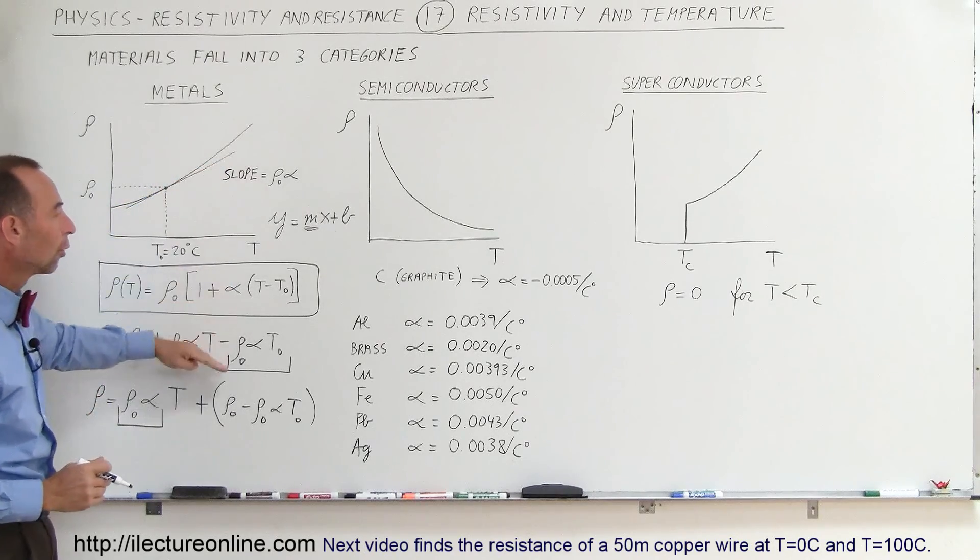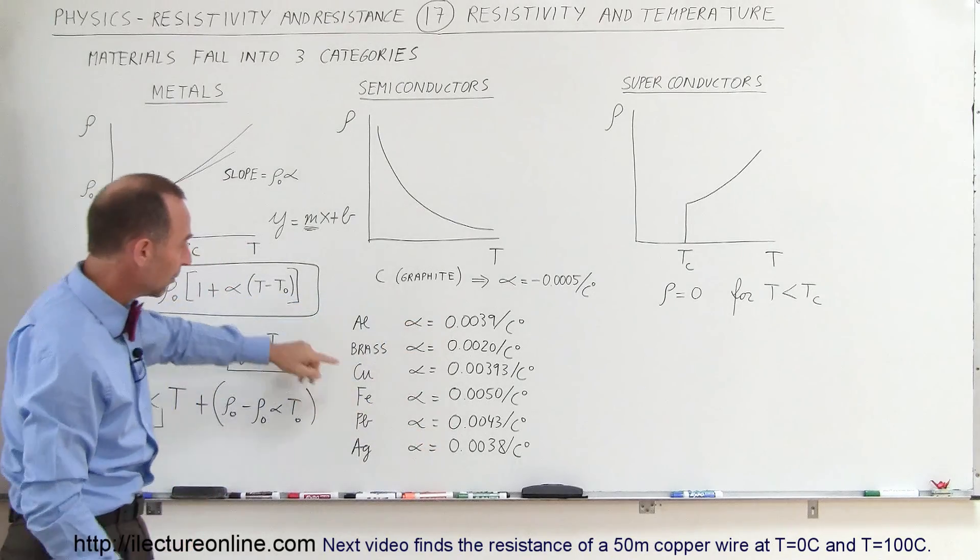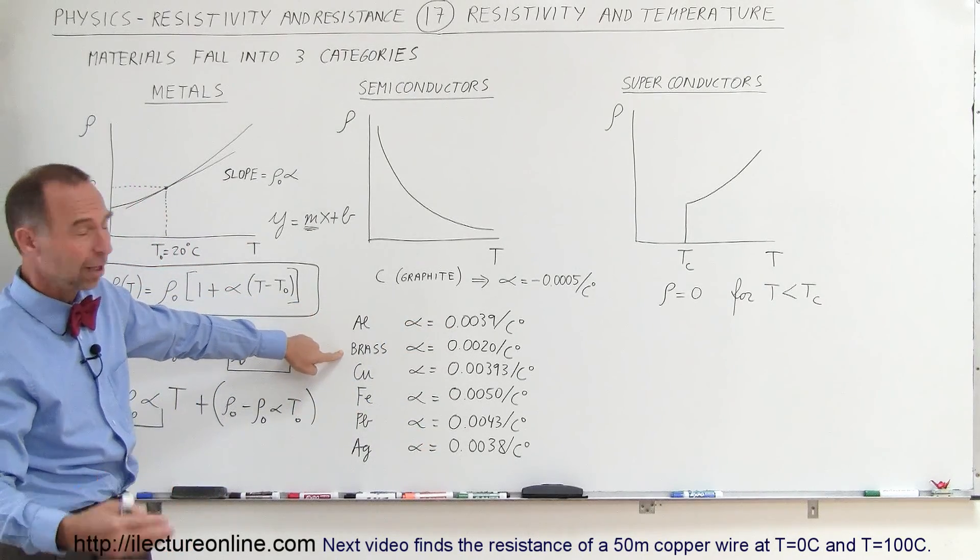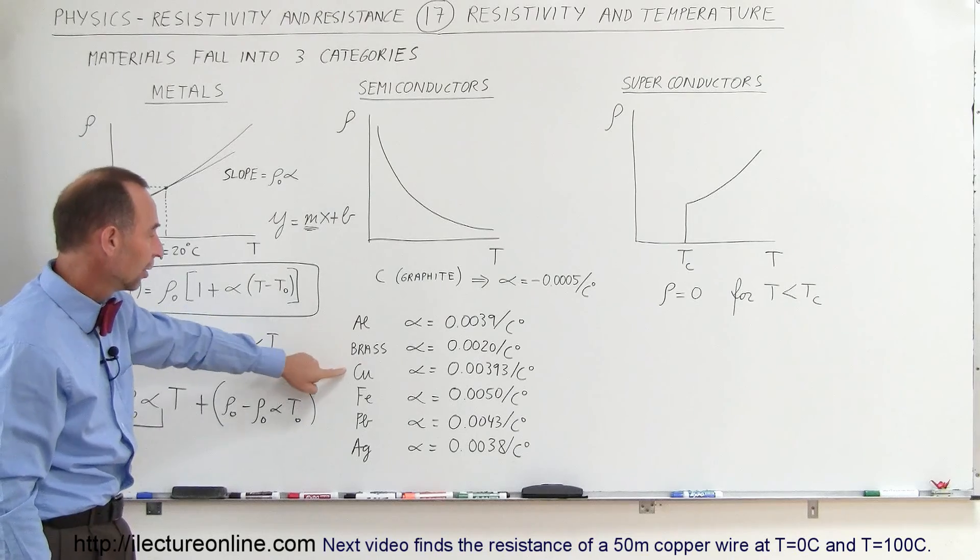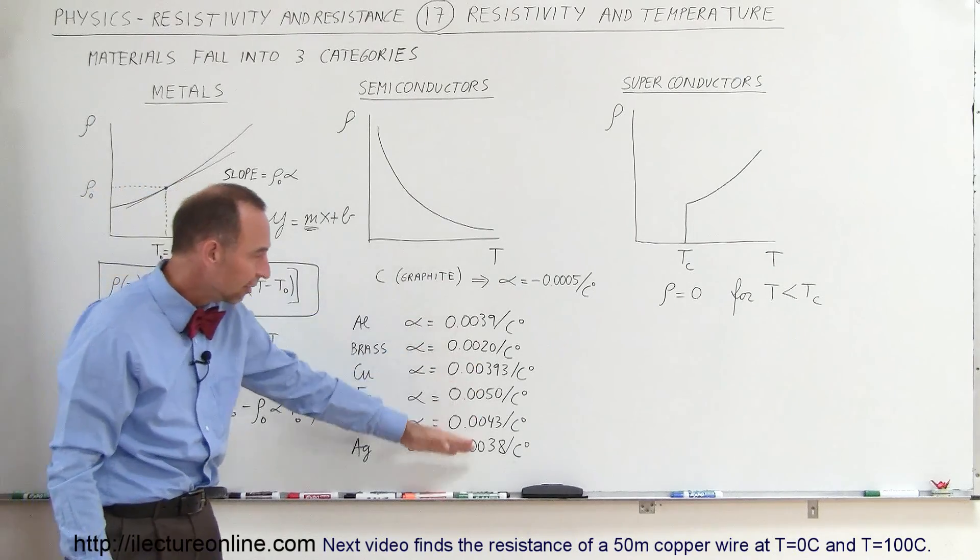Notice the temperature coefficient here for some common elements: aluminum, brass, which is not an element but an alloy, copper, iron, lead, and silver. Notice that they're all fairly similar.